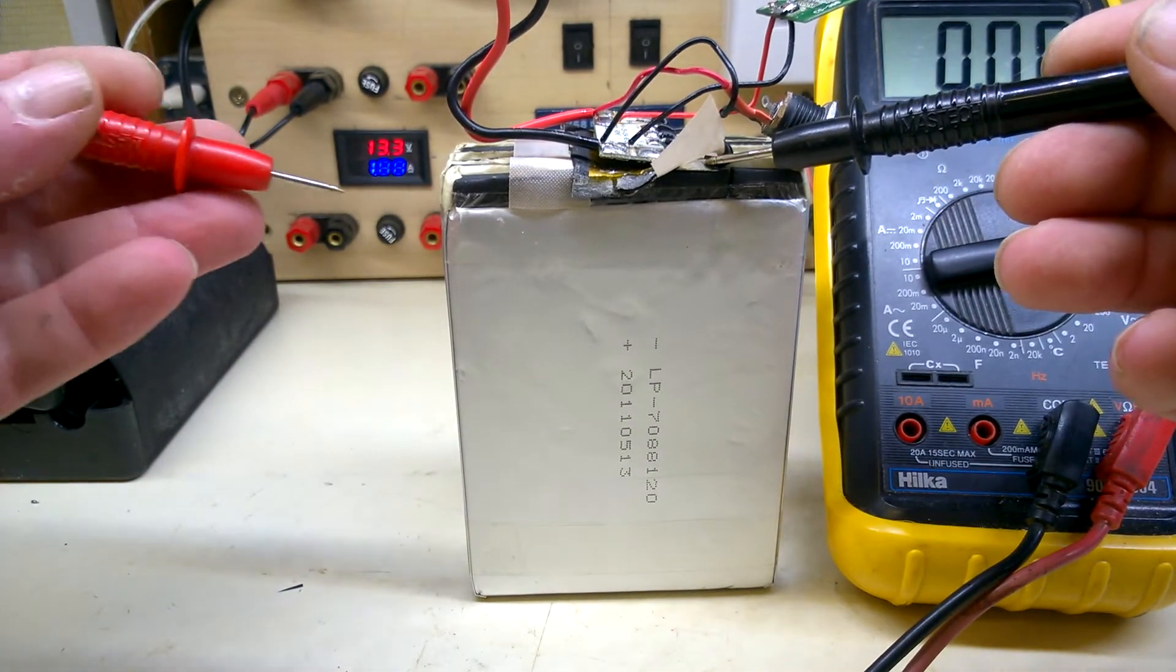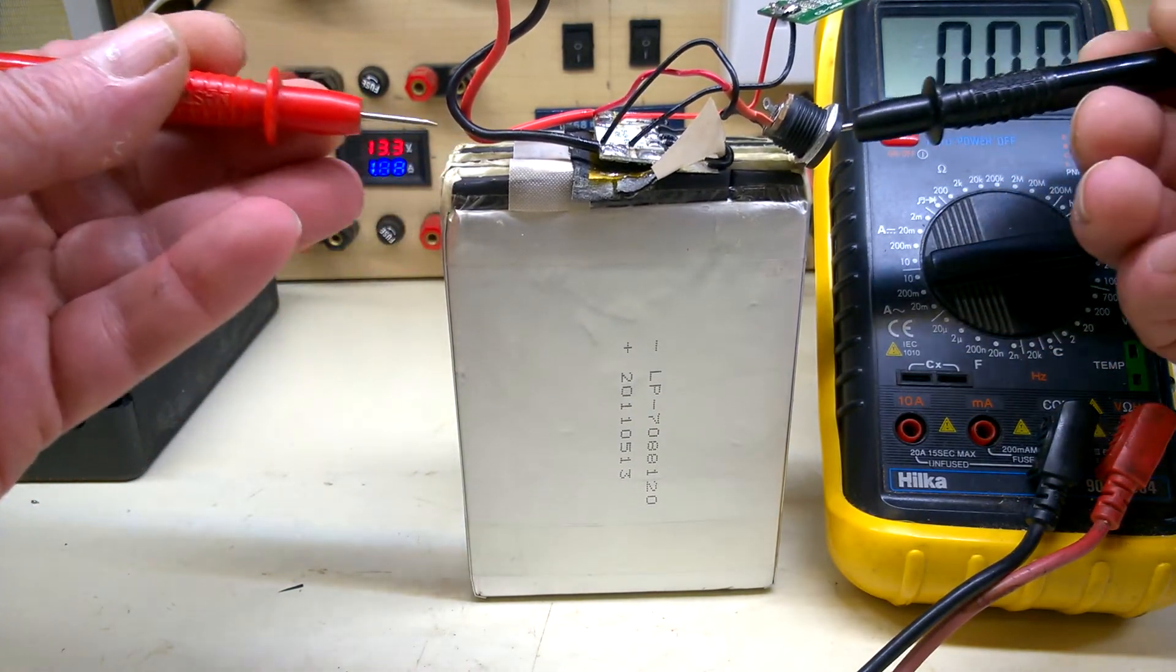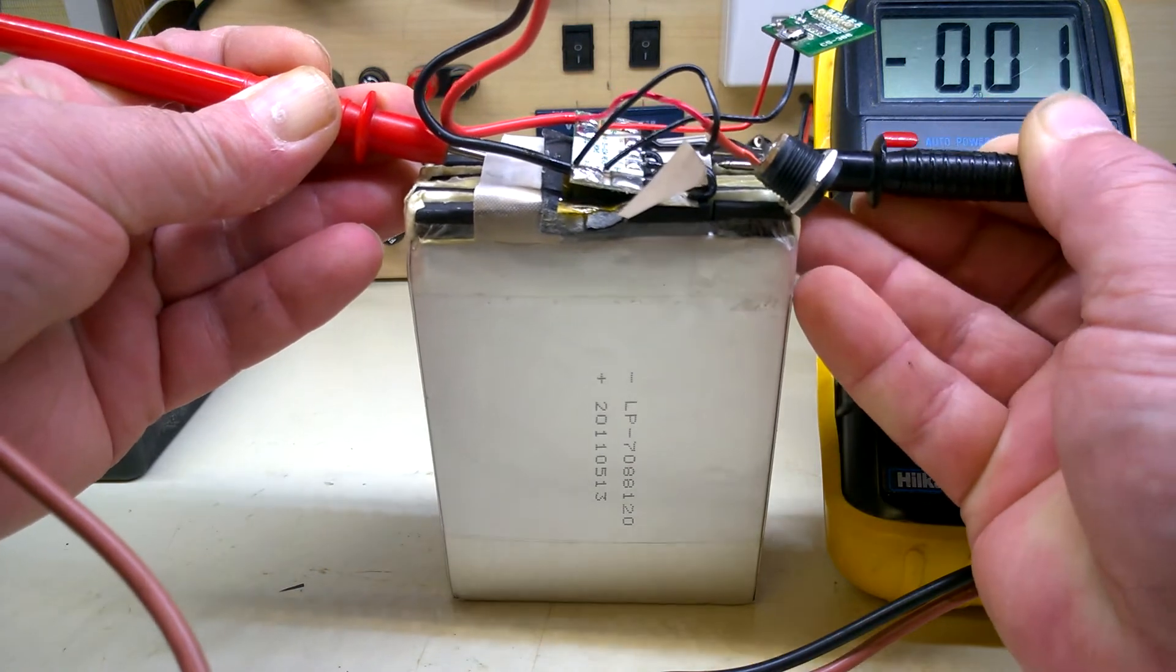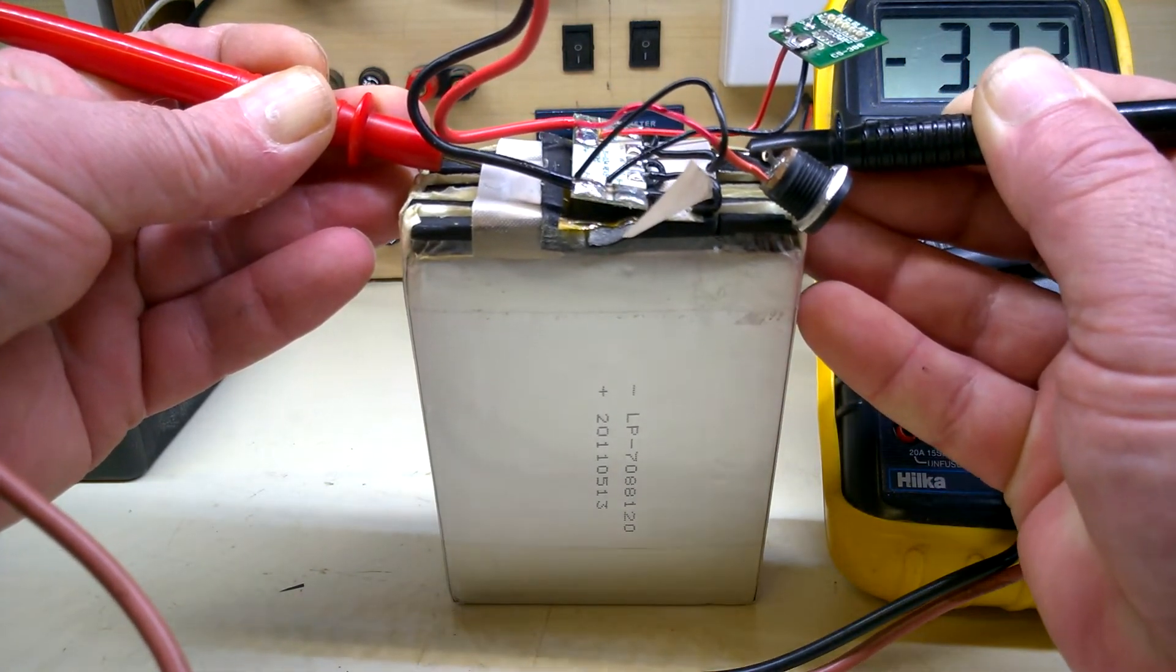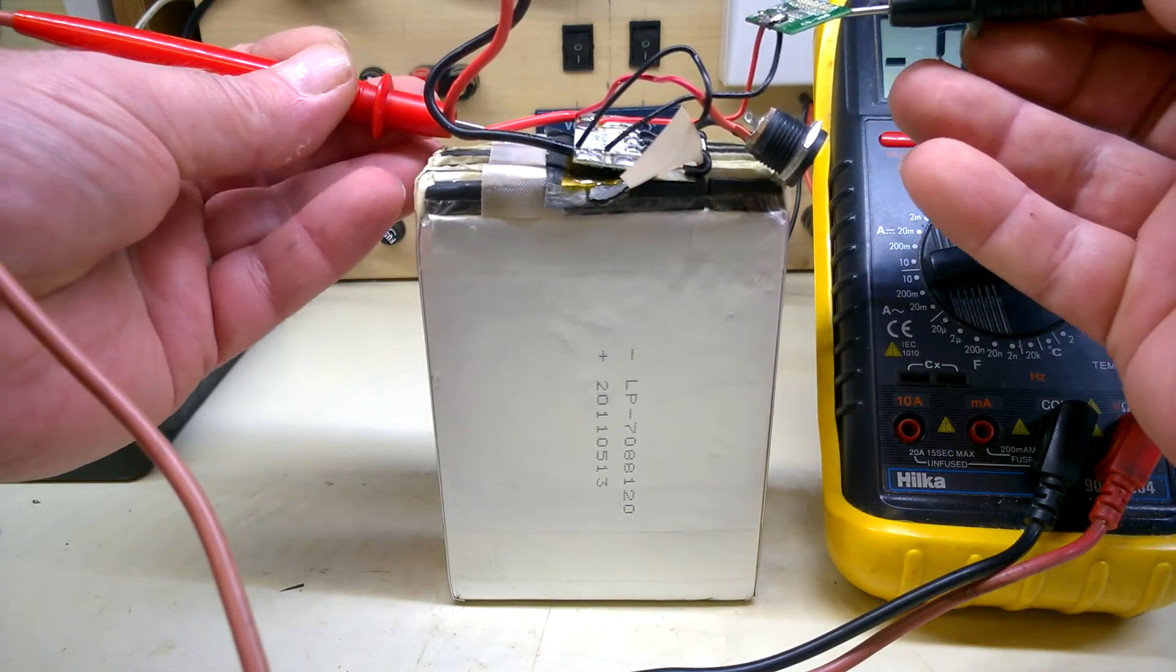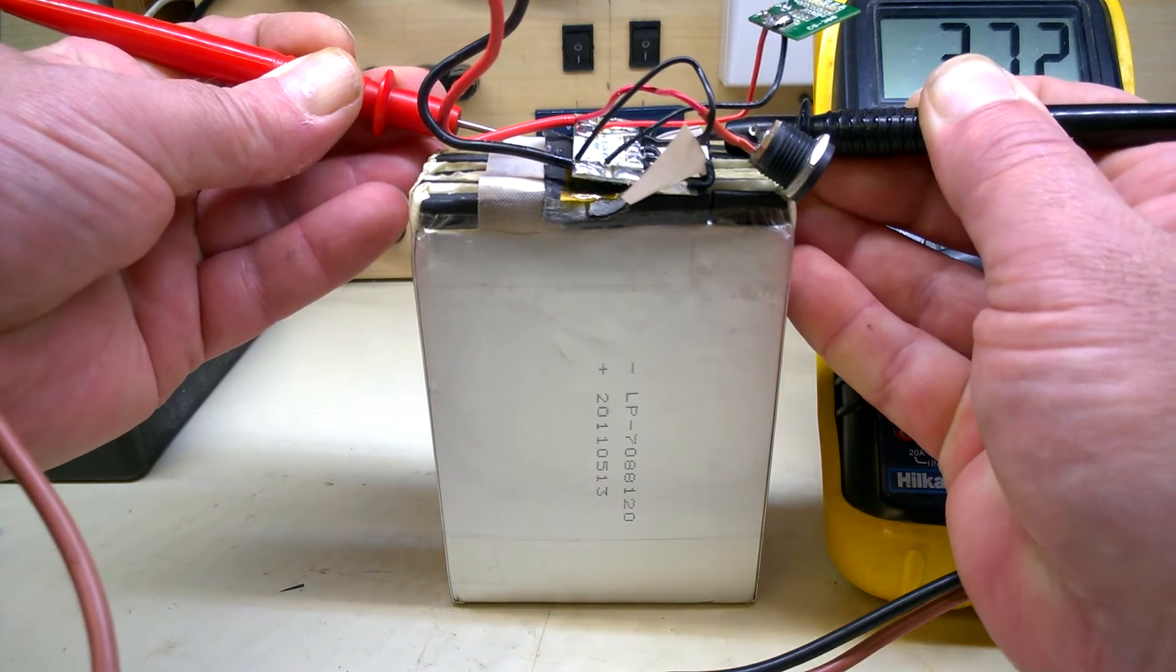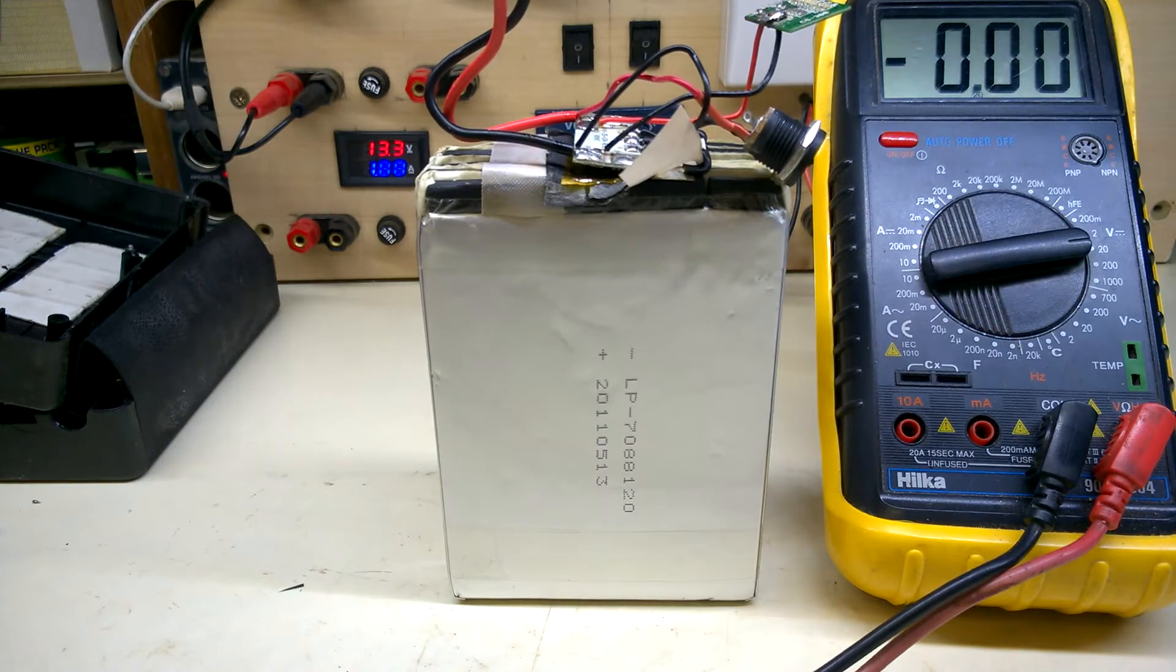I was going to check the individual cell voltages. That one is 3.7. There you go. Get your hand out of the way. If I do that you can see it. Just about 3.7. Half a thumb, and there's the last one done. I dropped my hand down. Yeah, 3.7. Okay, so the cells are balanced.